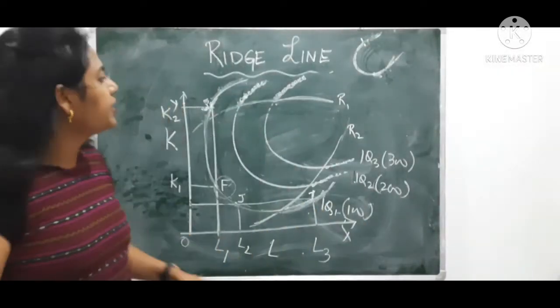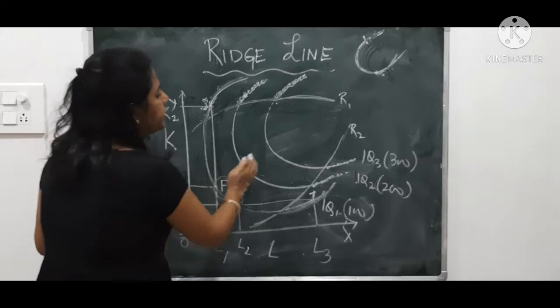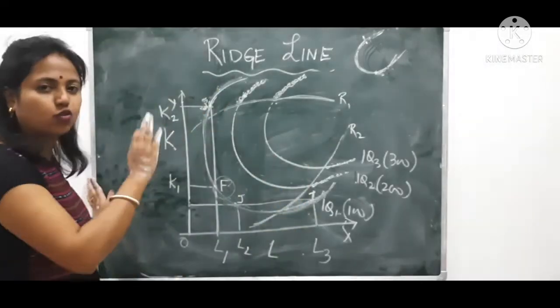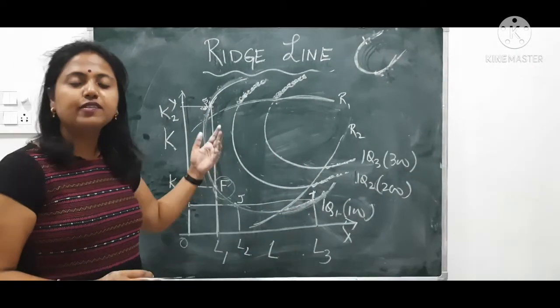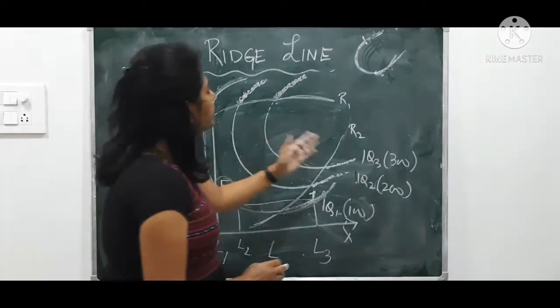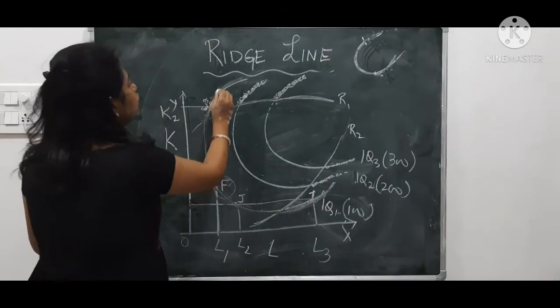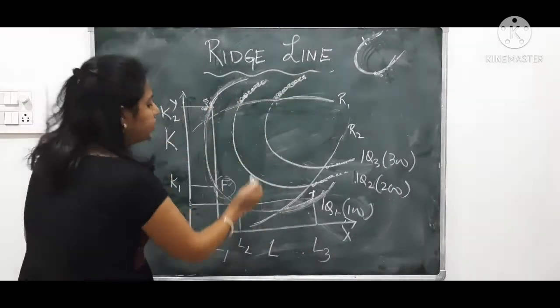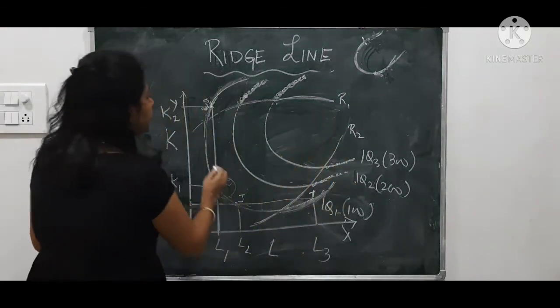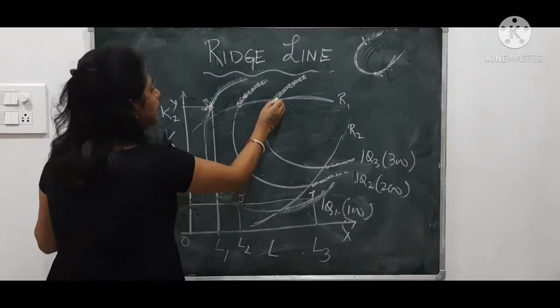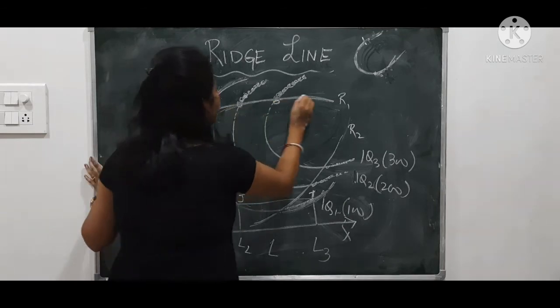Now, similarly, I will do for when we have so many isoquants, we call it isoquant map. We will do the same thing for all the curves and try to find out all those upward rising section and the downward rising section and then we join all those sections and we draw a line.